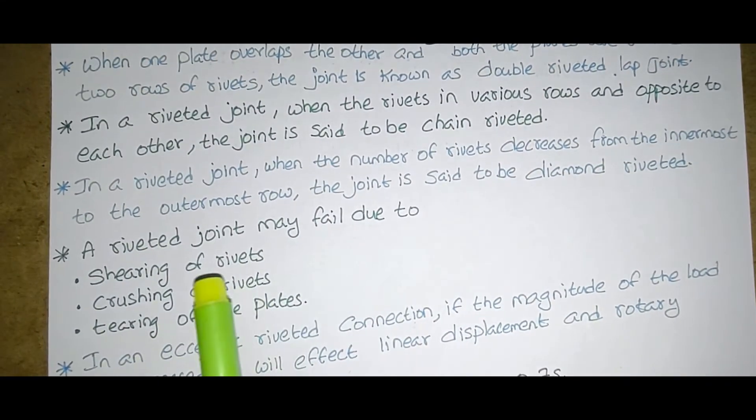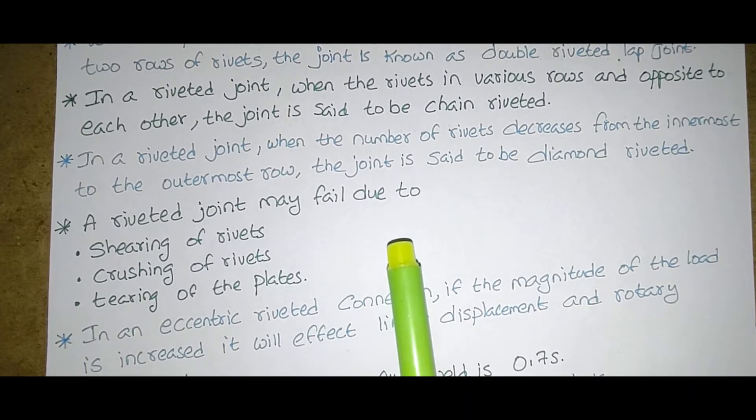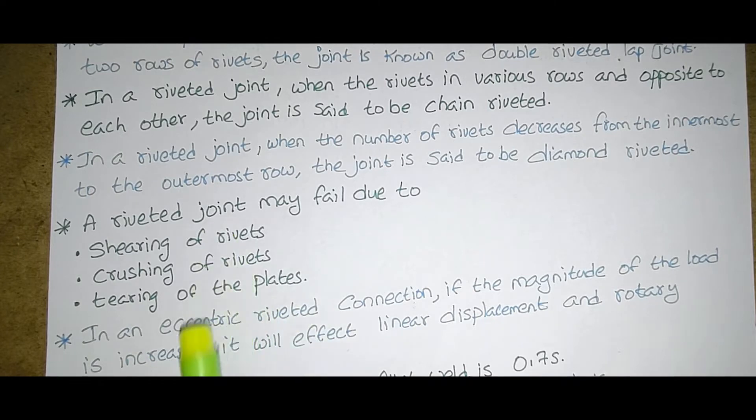A riveted joint may fail due to shearing of rivets, crushing of rivets, tearing of the plates. So these are the reasons why the rivet joint fails.